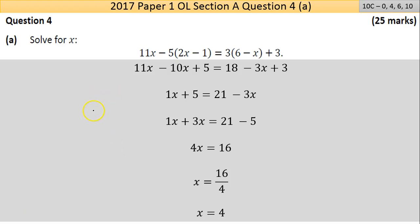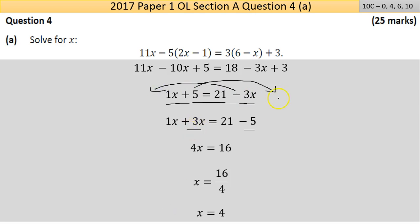Now I'm going to add like terms. On the left side: 11x take away 10x is 1x — 11 apples take away 10 apples is one apple. On the right side: 18 and 3 give 21. Now I bring all x's to one side and all numbers to the other. The plus 5 moves across the equals and becomes subtracted. The minus 3x moves across and becomes added. The rule is: moving something across the equals changes its operator.